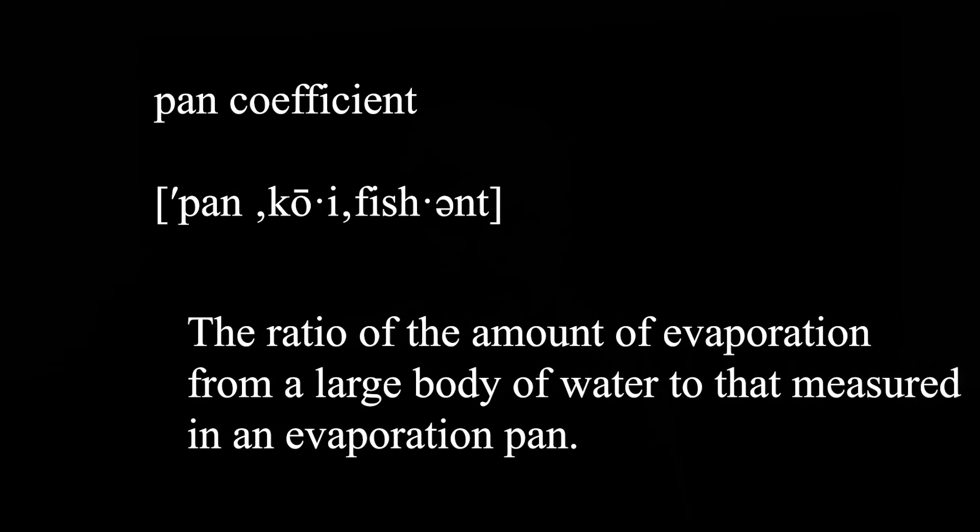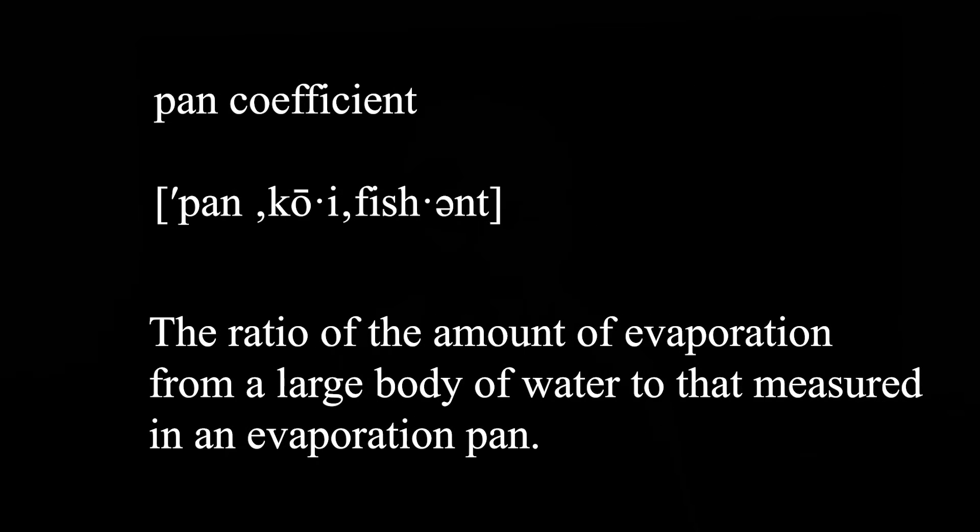The loss of water from the pan is measured periodically — most people measure it daily, and we measure it daily as well. Then an adjustment factor called the pan coefficient has to be applied to estimate the actual amount of evaporation from the lake.